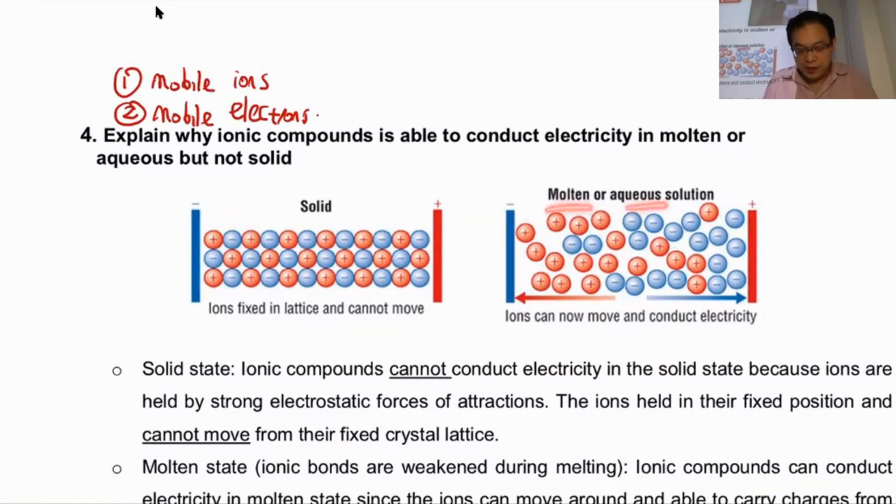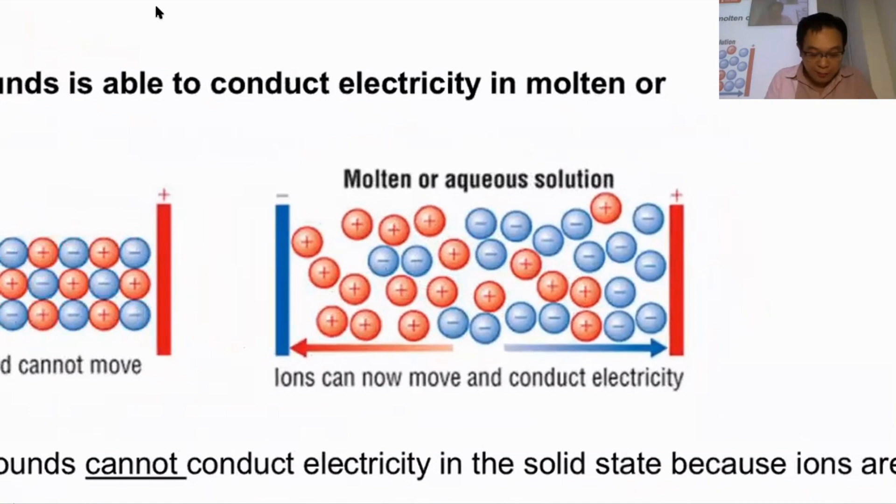The difference between molten and aqueous is they can move. When they can move, there's an electrical current. Electrical current means electrons passed to the ion, so the minute it's passed to the ion, this ion can move.